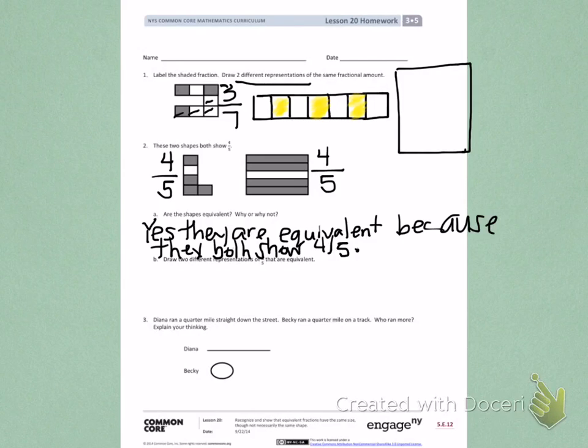Draw two different representations of 4 fifths that are equivalent. So, another example, we could draw a long, skinny rectangle partitioned into fifths. And then I would shade 4 fifths.